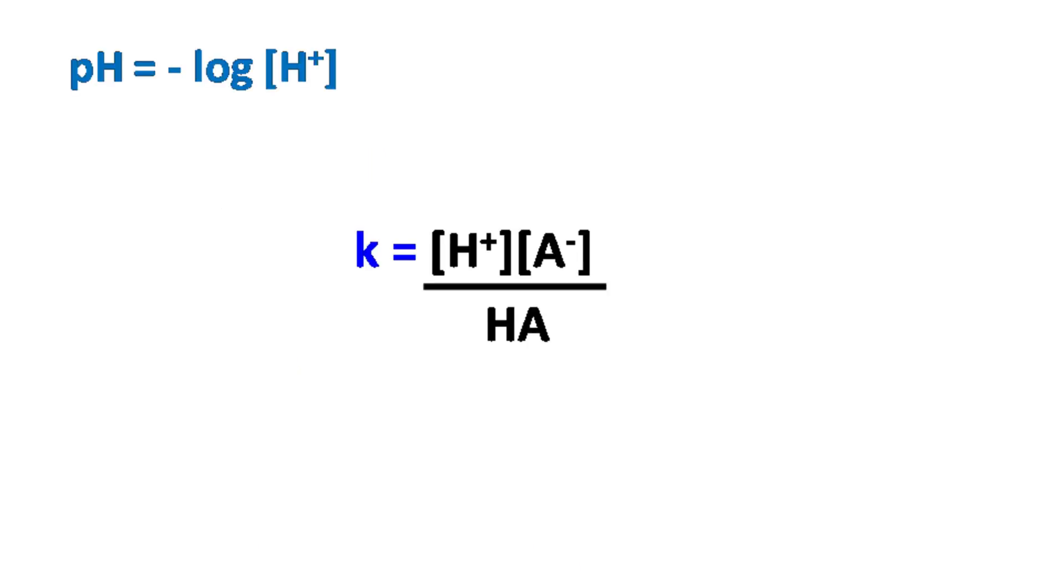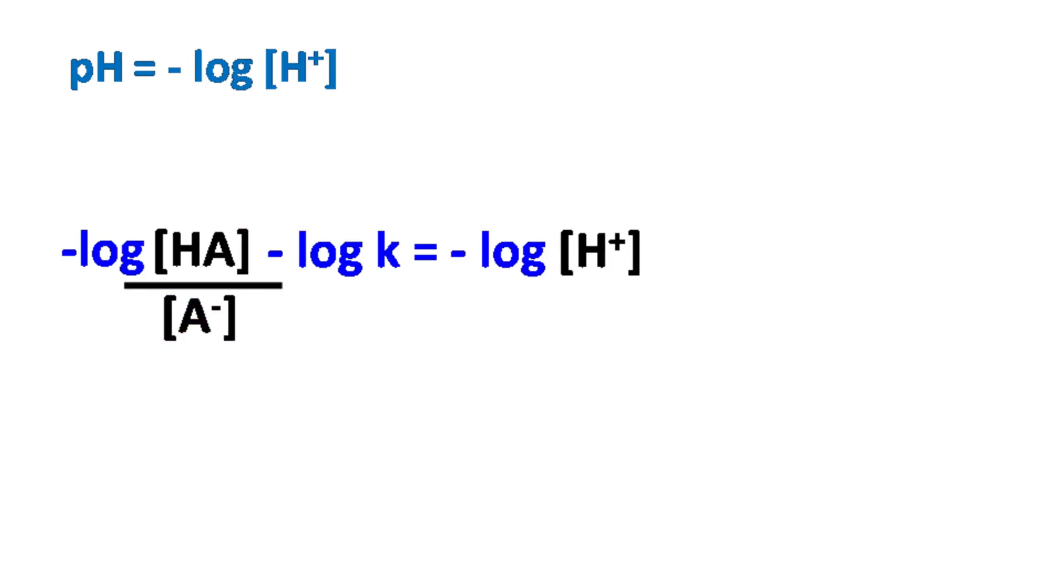Now pH is negative logarithm of H+ ions so let's rearrange this equation to get H+. The negative logarithm of H+ in the equation can be replaced by pH, and the negative logarithm of dissociation constant is known as pKa.